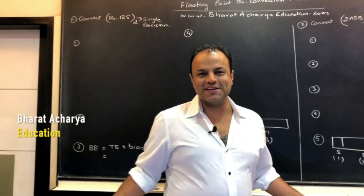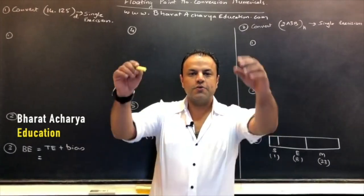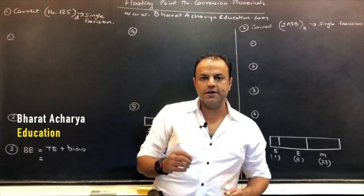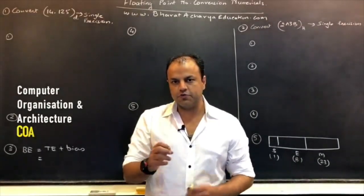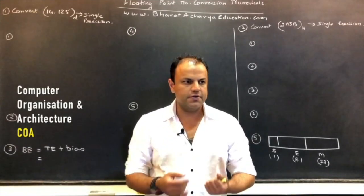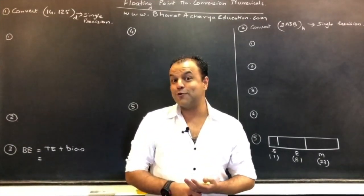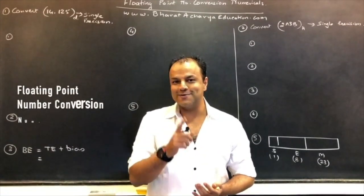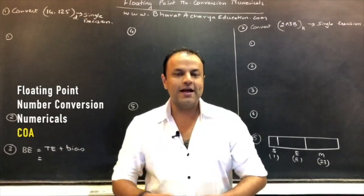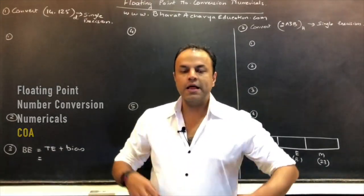Hello people, I'm Bharat Acharya. Welcome to a new video. In today's video, we're going to do floating point number conversions. Last video, we saw how floating point numbers are represented — the IEEE 754 32-bit format, also called single precision or short real, and the 64-bit format double precision, called long real.